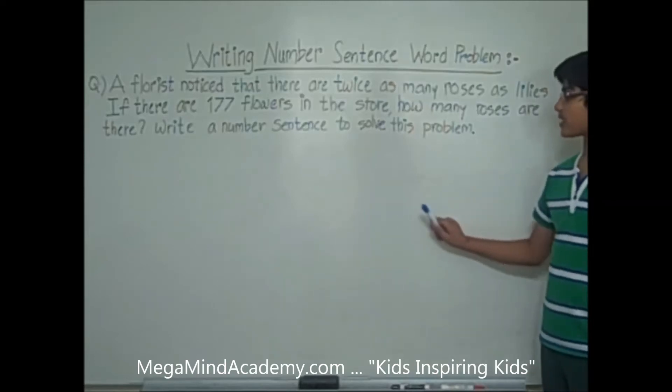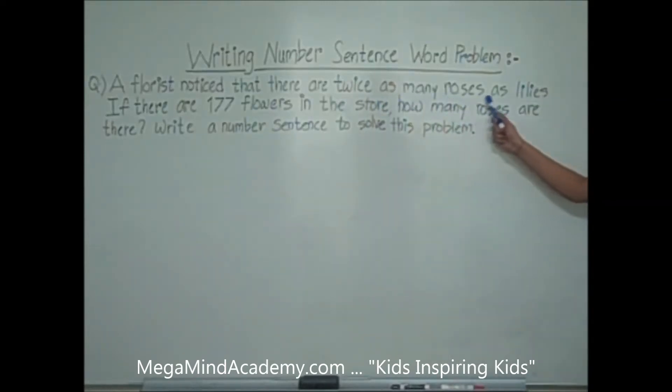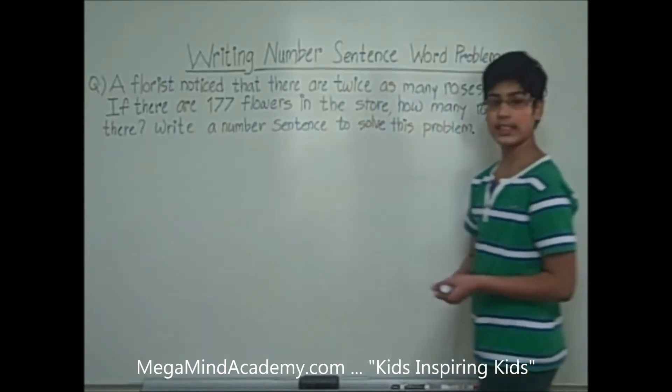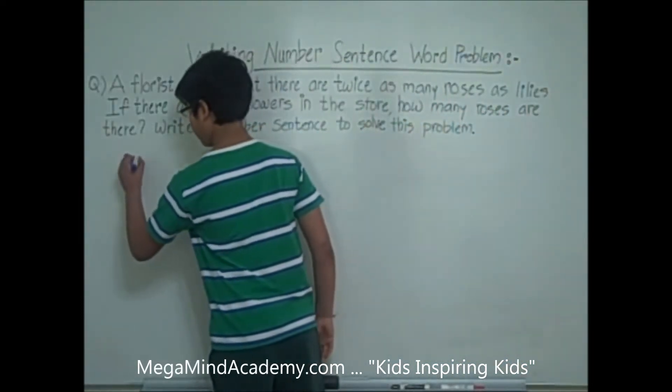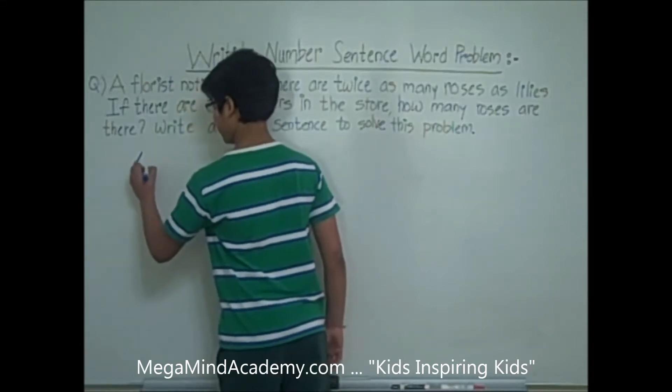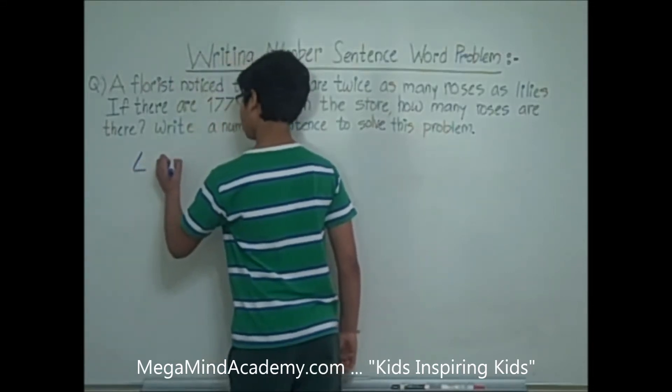Now, it says that there are twice as many roses as lilies. So let's say that lilies equals x. Lilies, L for lilies, equals x.